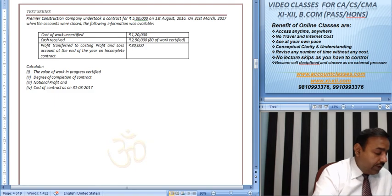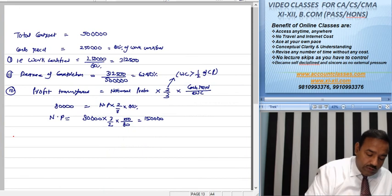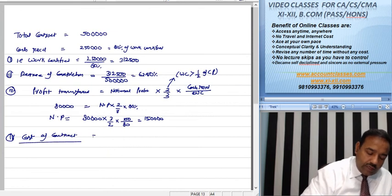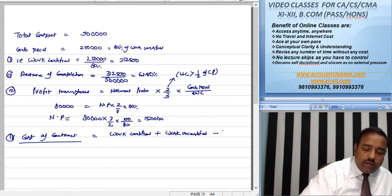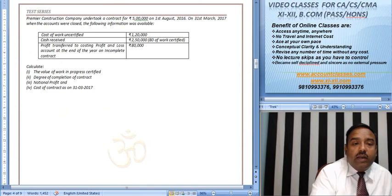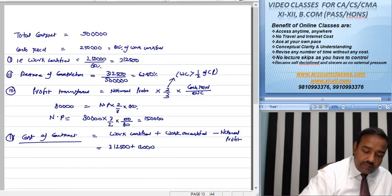This is how much it took place: 1,50,000. Work Certified plus Work Uncertified minus Notional Profit. Work Certified is 3,12,500, and Work Uncertified is 1,20,000, and 1,50,000 is Notional Profit.